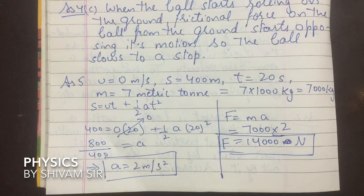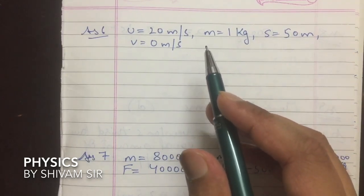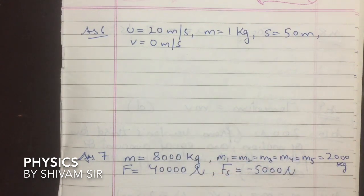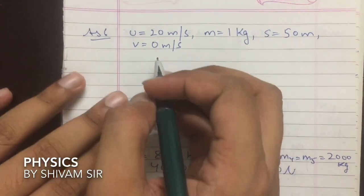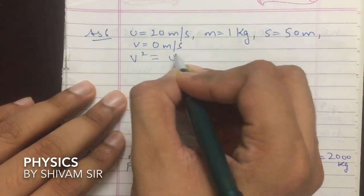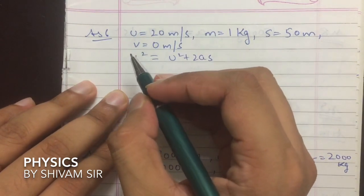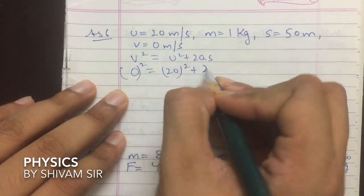Next question: A stone of 1 kg is thrown with a velocity of 20 m/s across the frozen surface of a lake and comes to rest after traveling 50 m. Mass m = 1 kg, s = 50 m, u = 20 m/s, v = 0. We need to find the force of friction between the stone and the ice. Using v² = u² + 2as: 0 = 400 + 100a, so a = -4 m/s².